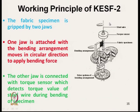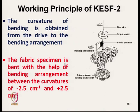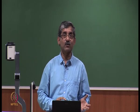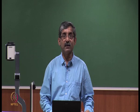This detects the torque value, and from the torque value we can get the bending force. The curvature of bending is obtained from the drive to the bending arrangement. From the gearing arrangement of this drive, we can calculate the bending angle and total curvature. The fabric specimen is bent between curvatures of plus and minus 2.5 cm⁻¹, which is the curvature limit — it goes from +2.5 to −2.5 and back.